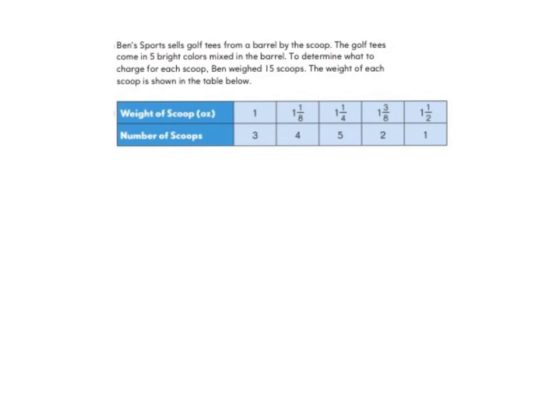We're going to take a look at a second example. Ben's Sports sells golf tees from a barrel by the scoop. The golf tees come in 5 bright colors mixed in the barrel. To determine what to charge for each scoop, Ben weighed 15 scoops. Go ahead and look at the table, then pause the video to draw yourself a line plot and compare it to the one I'll walk you through.